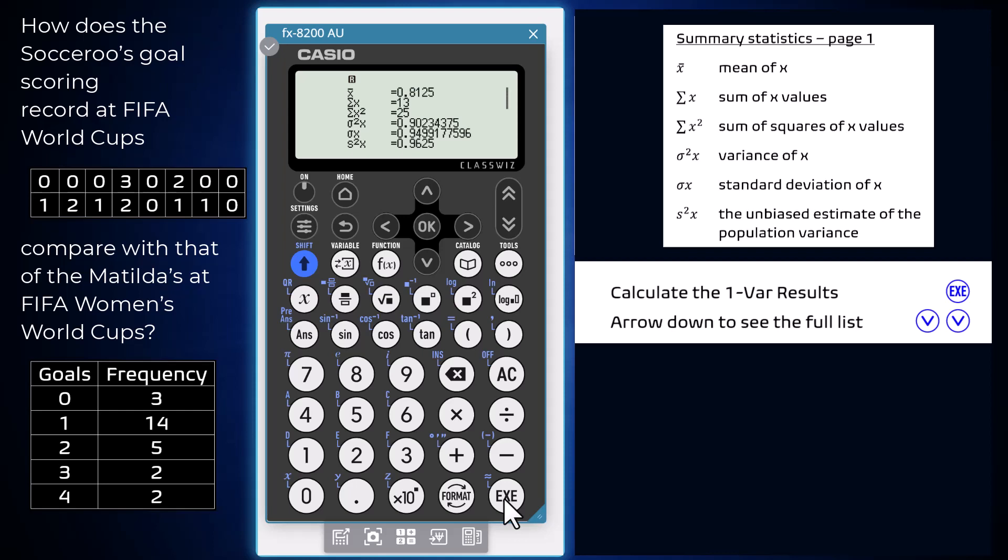The first page shows a range of summary statistics including, at the top of the list, the mean of the data set X bar and, second to bottom, the standard deviation of the data set.